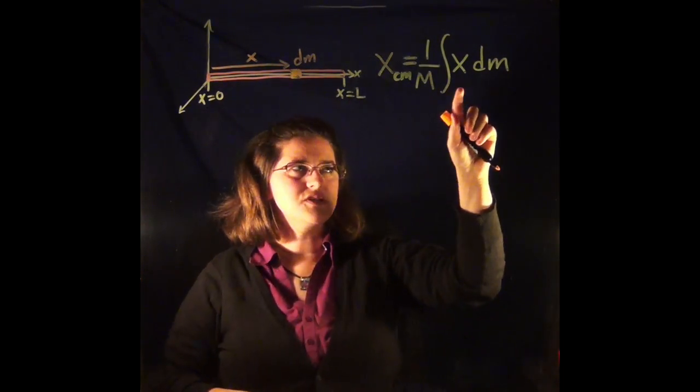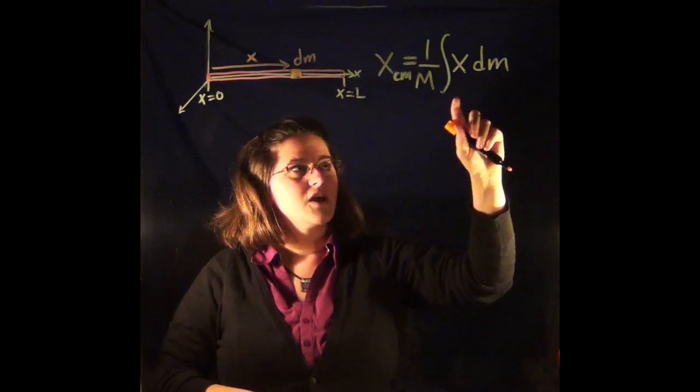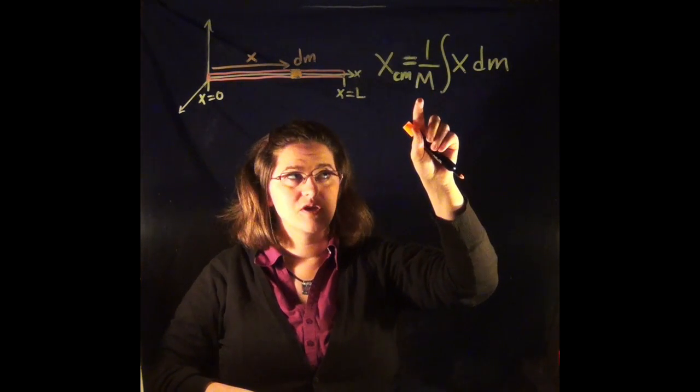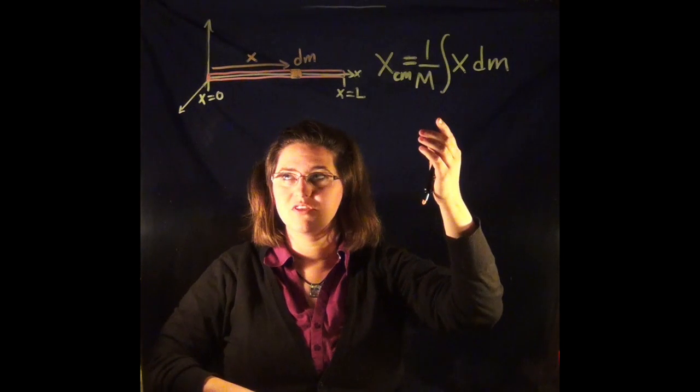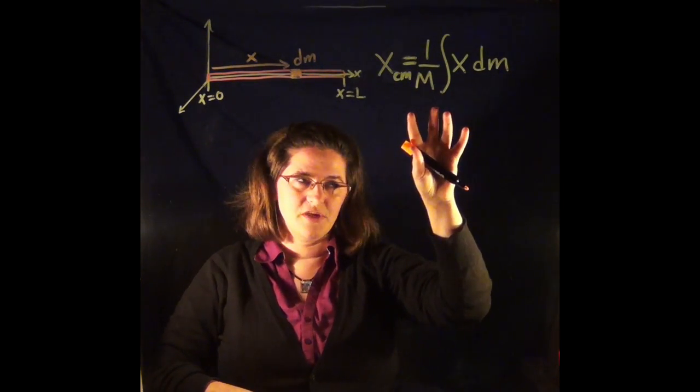So we need something to plug in for x and we need something to plug in for dm. And we need limits of integration. And if we're given the total mass, then we can plug in the total mass. If we're not given the total mass, then we need to find it. In this case, let's assume that we're given the total mass.